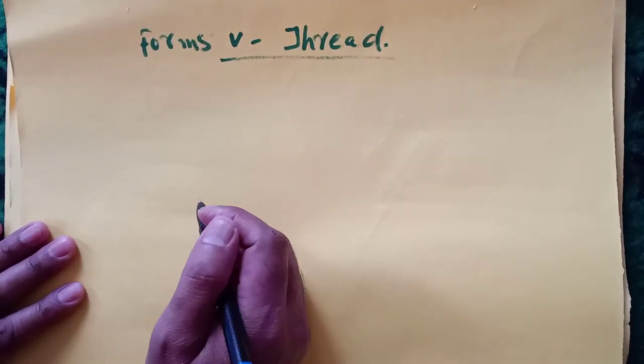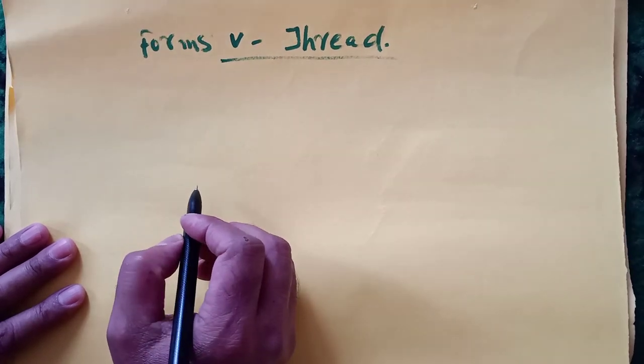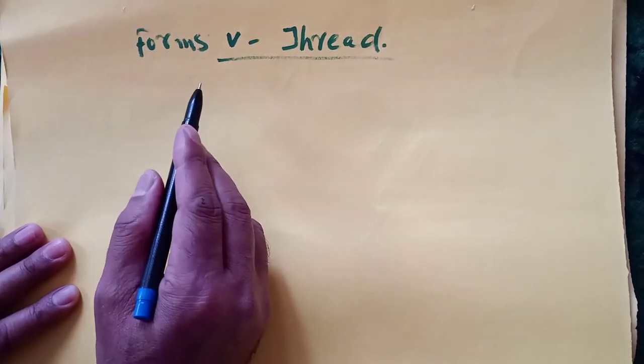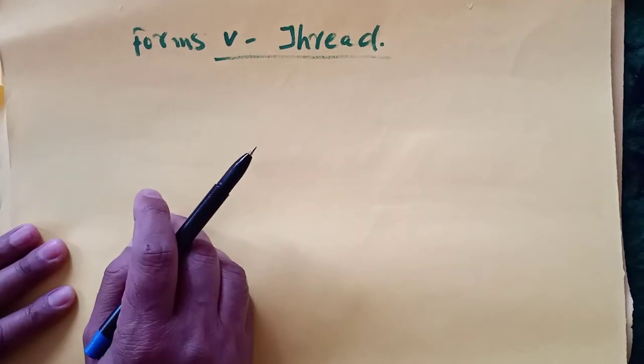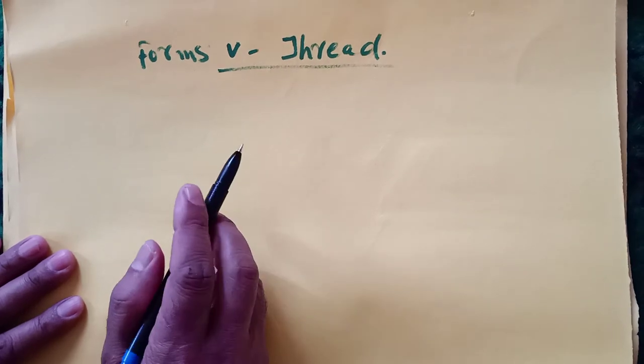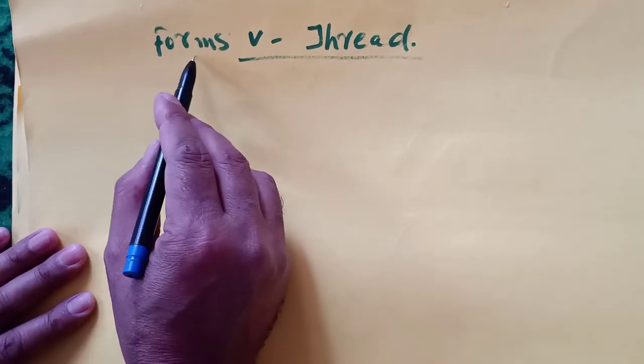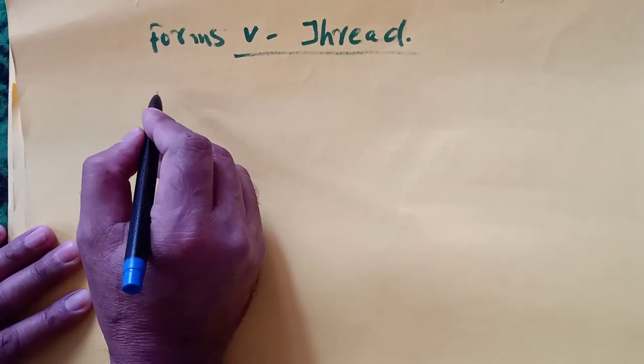Dear students, welcome again. Today's topic is the forms of V threads. V thread is also known as triangular thread. As you know, V threads are stronger than square threads. There are four forms of V threads.